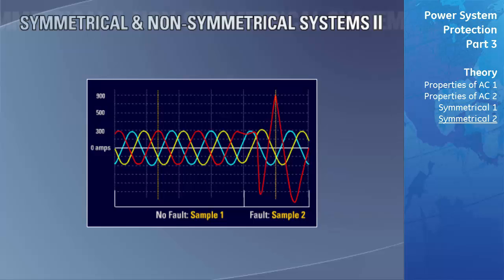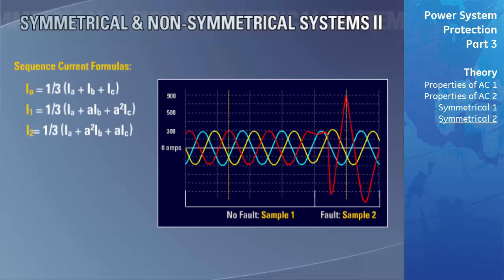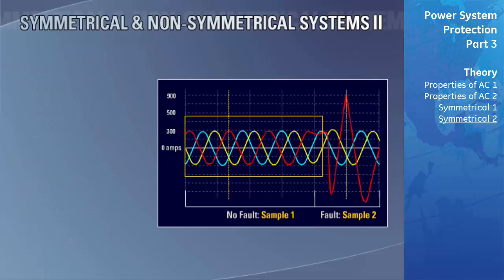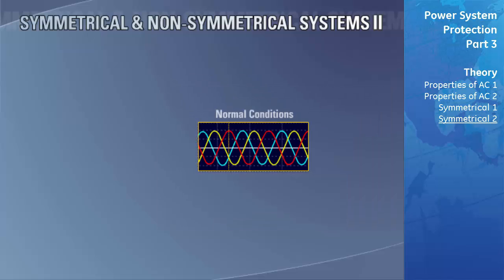Sample 1 data is prior to the fault, while sample 2 data is during the fault. Since we know the values of Ia, Ib, and Ic, we use the displayed equations to calculate the sequence current quantities at sample 1 and sample 2. Once the sequence components are calculated, the unbalanced currents of phase A will be recalculated using the displayed formulas to verify the results. Under normal conditions, power is generated and distributed as a balanced system, possessing only positive sequence currents and voltages according to Fortescue.